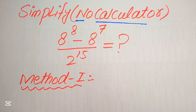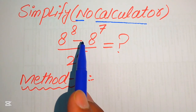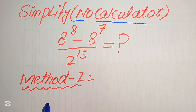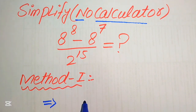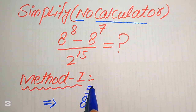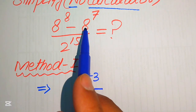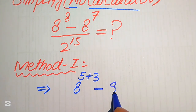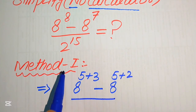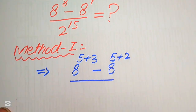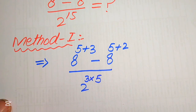Now we start our first method. In the first method we need to focus on the exponents of the numerator as well as the denominator. In the numerator, the exponent of the first term is 8, so we break this as 5 plus 3. The exponent of the second term is 7, and we write it as 8 to the power of 5 plus 2. In the denominator, this is 2 to the power of 15, and we write 15 as 3 multiplied by 5.